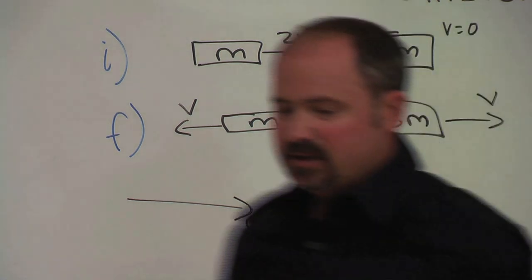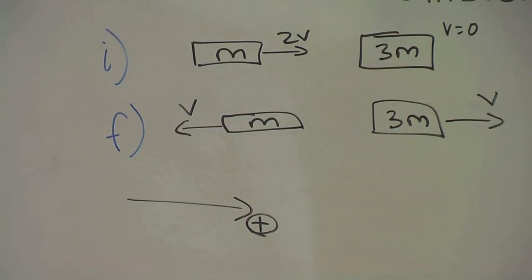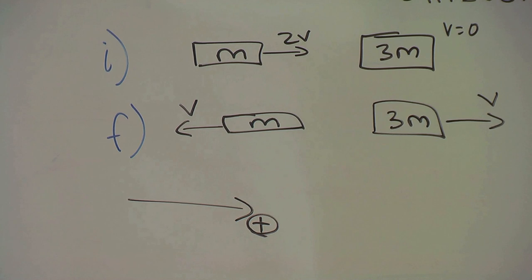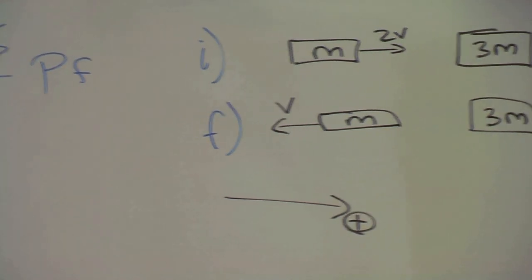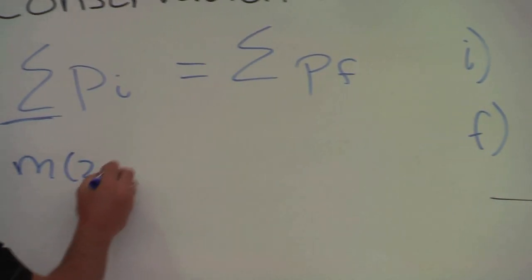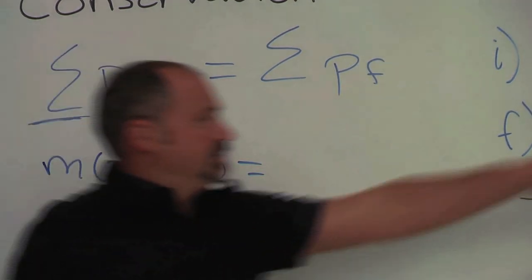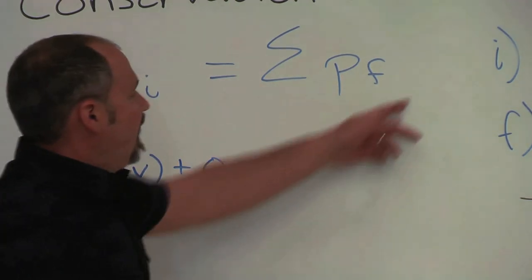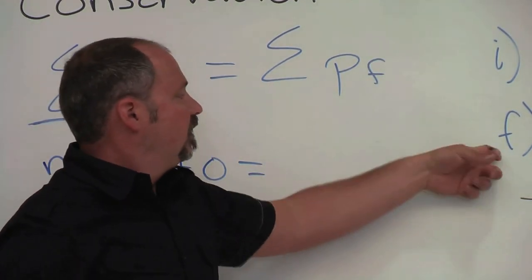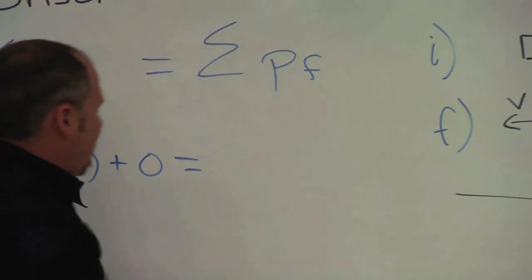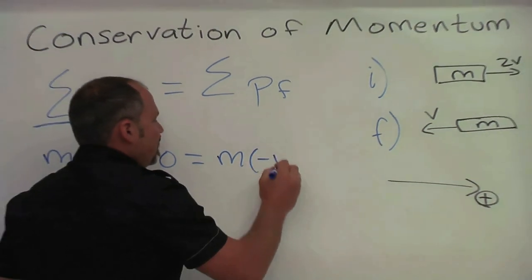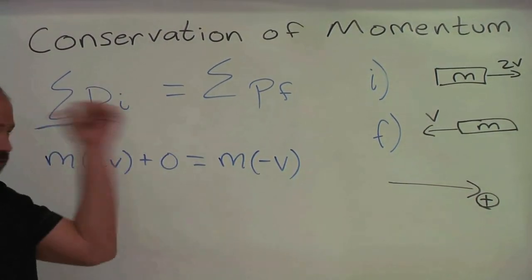Let's see if momentum is conserved. Well, if we add up all the momentum before the collision, we have mass times two times the speed plus zero because that guy is not moving. And then after the collision, we have this guy, M, but now with a negative V because it's going in the other direction.